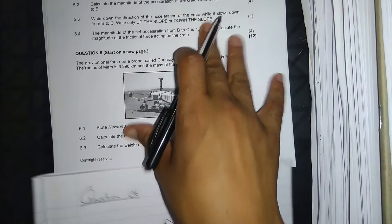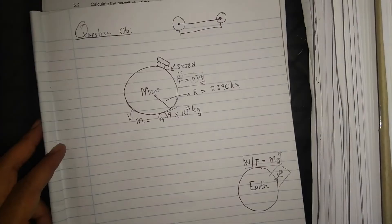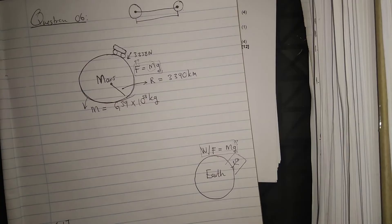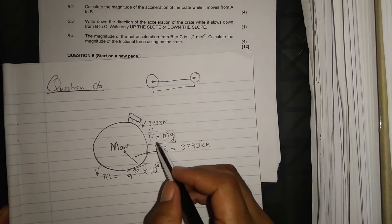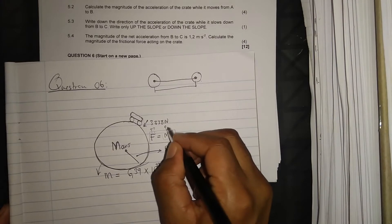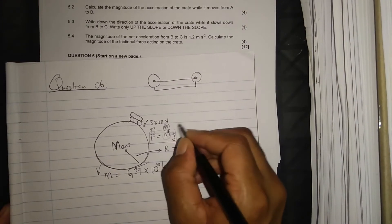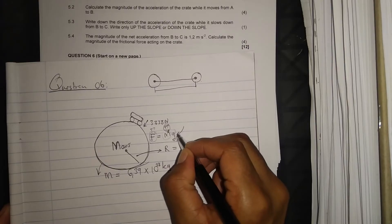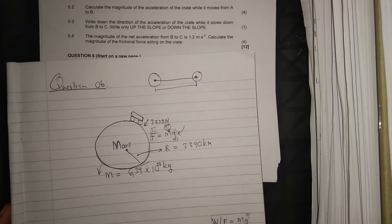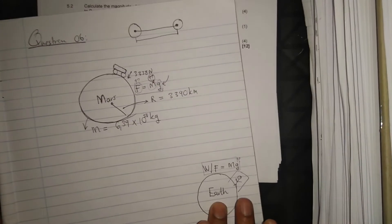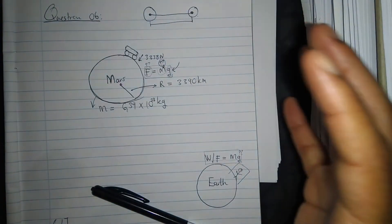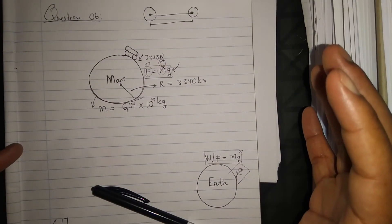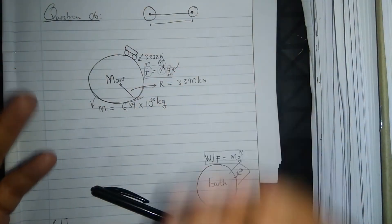Now we need to calculate the mass of the probe. The mass of the probe will be calculated using F equals mg. I have the gravitational force. What I still need is the gravitational acceleration. Each and every planet has a unique gravitational acceleration — the bigger the planet, the bigger the gravitational acceleration; the smaller the planet, the smaller the gravitational acceleration.